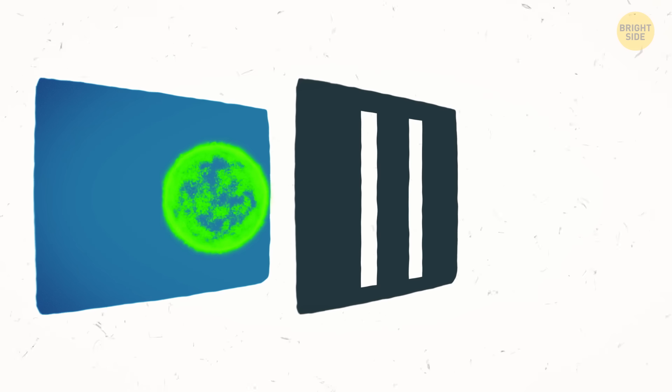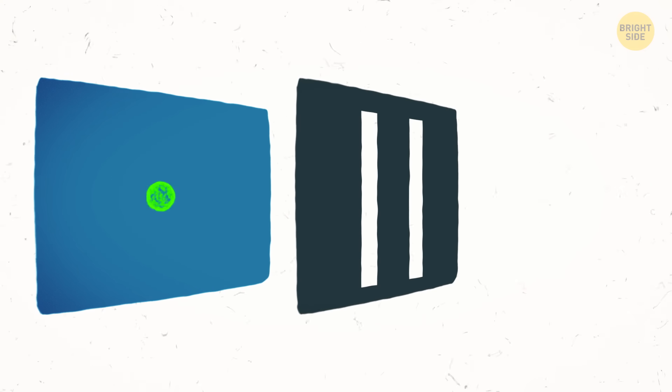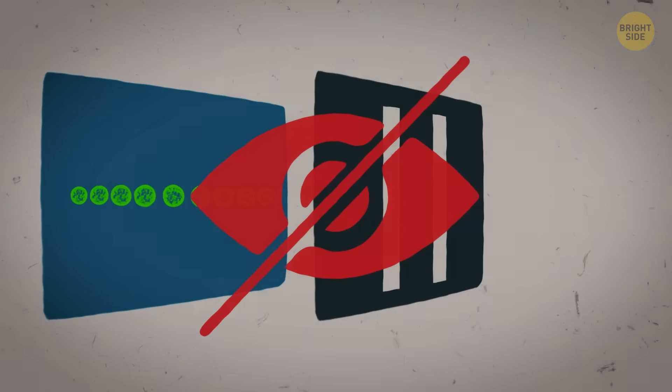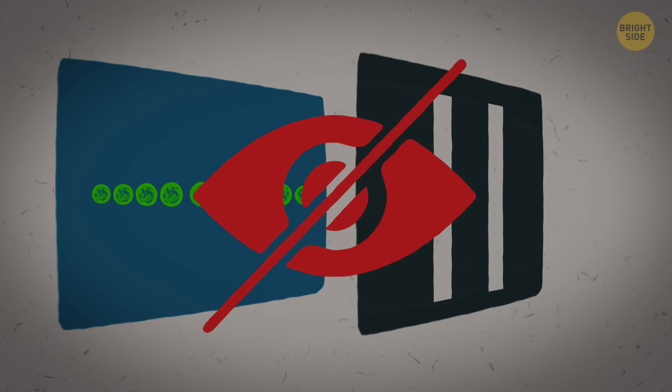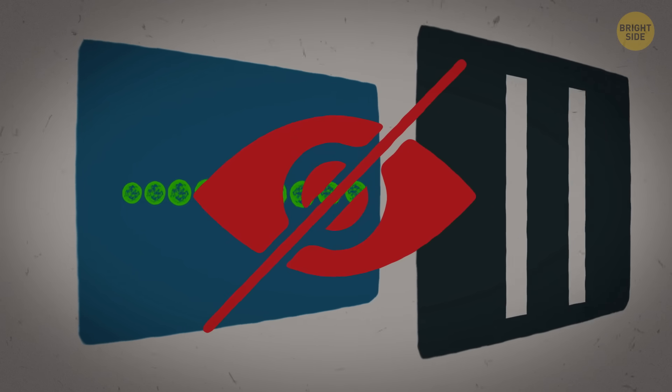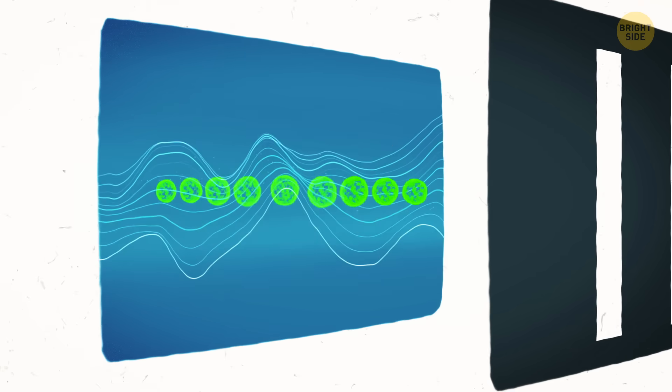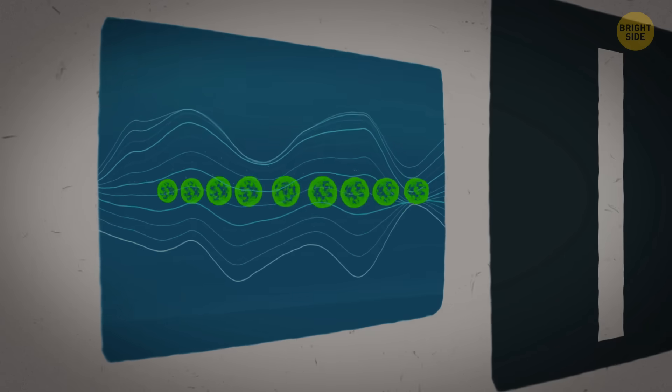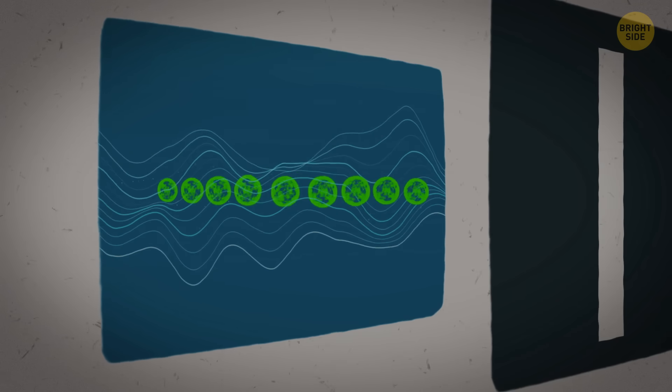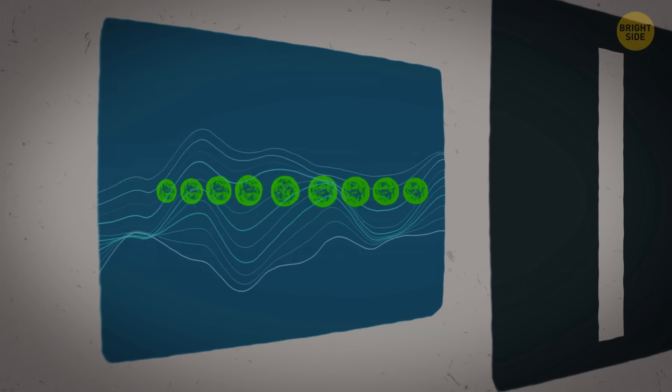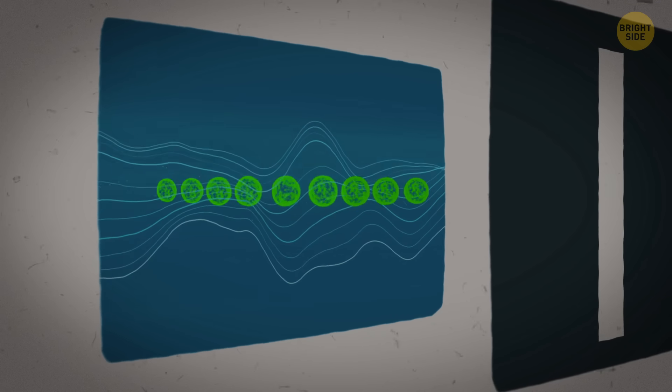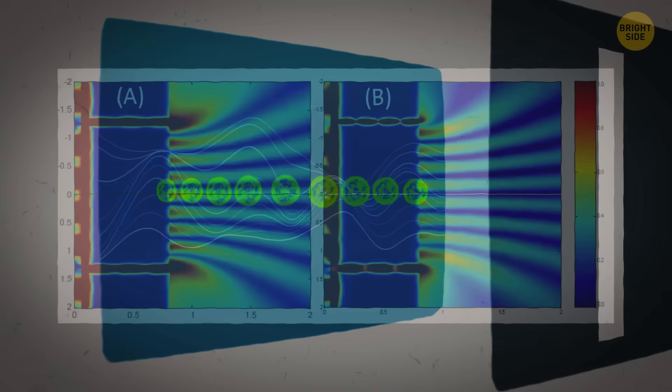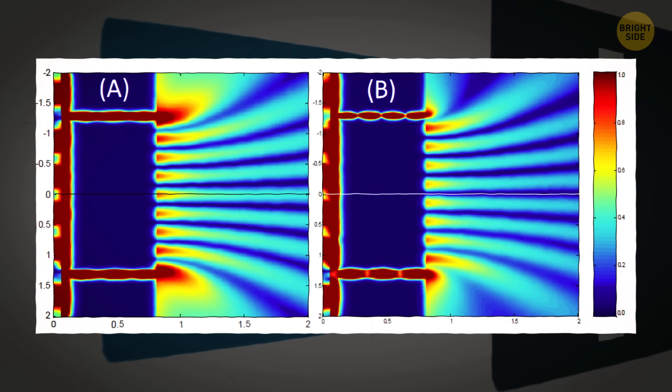But then, something crazy happens. If no one's observing what's going on, in other words, no one's directly measuring or watching what the particles do, and we only see the final results on the screen, they start to behave like waves. They create an interference pattern on the screen, a weird pattern right between the slits. This would mean that they somehow pass through both slits at the same time, as if the light were a wave.